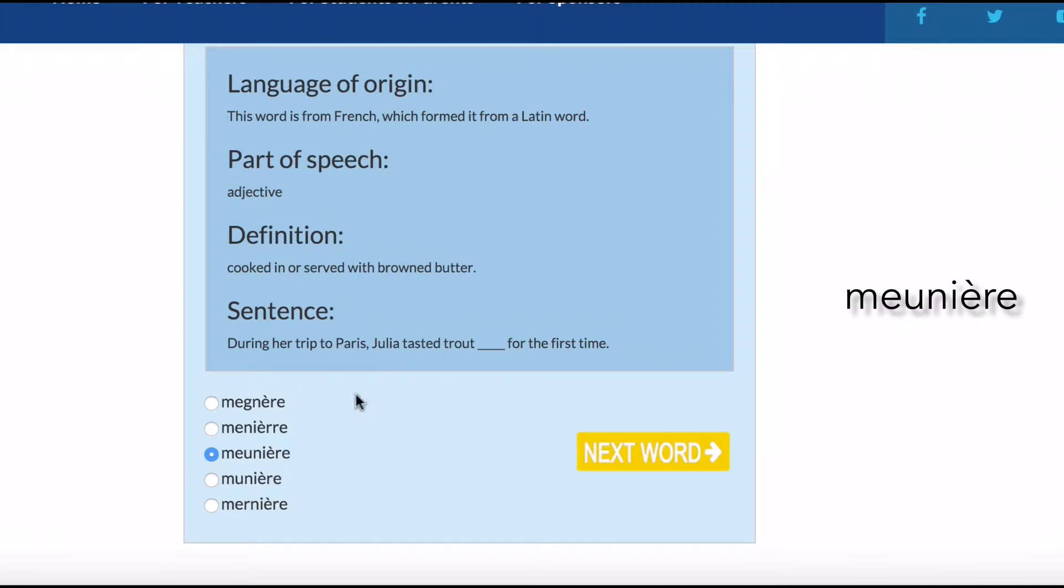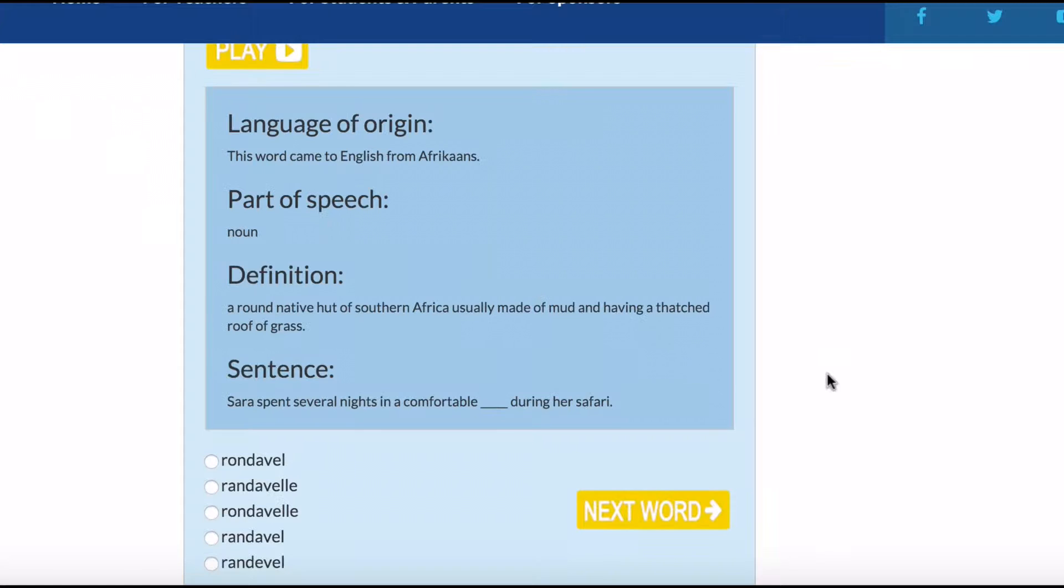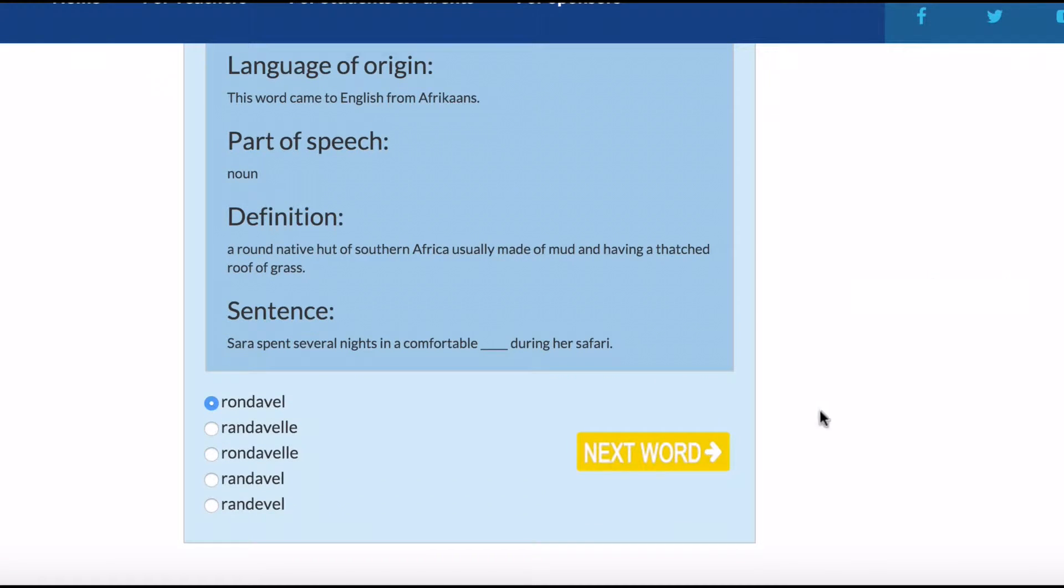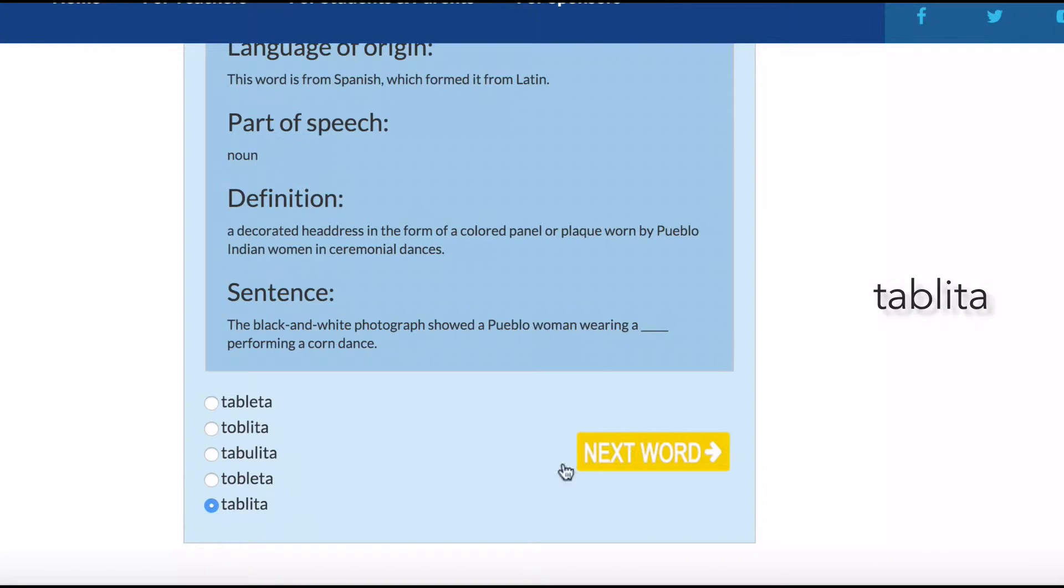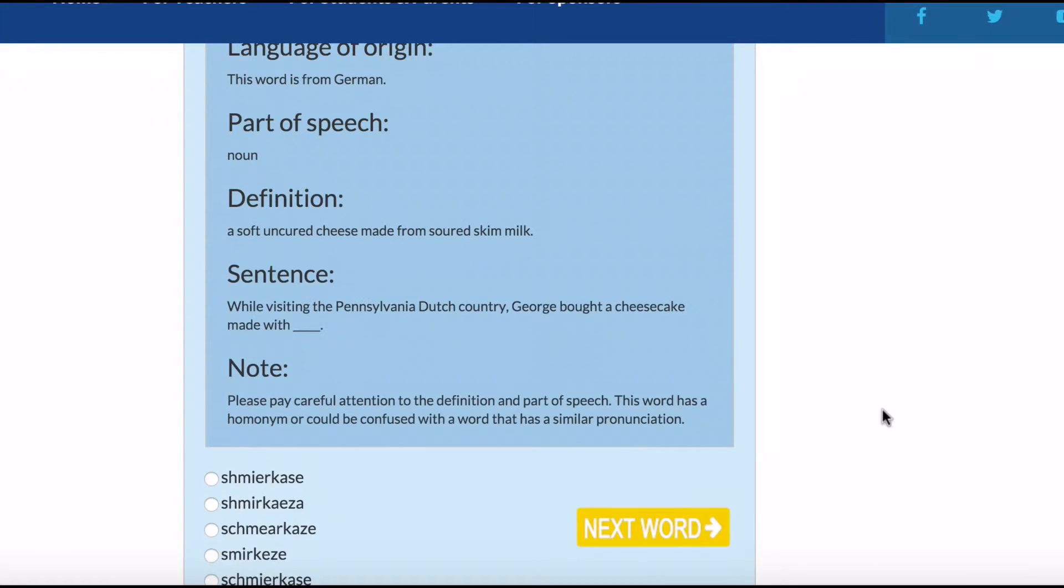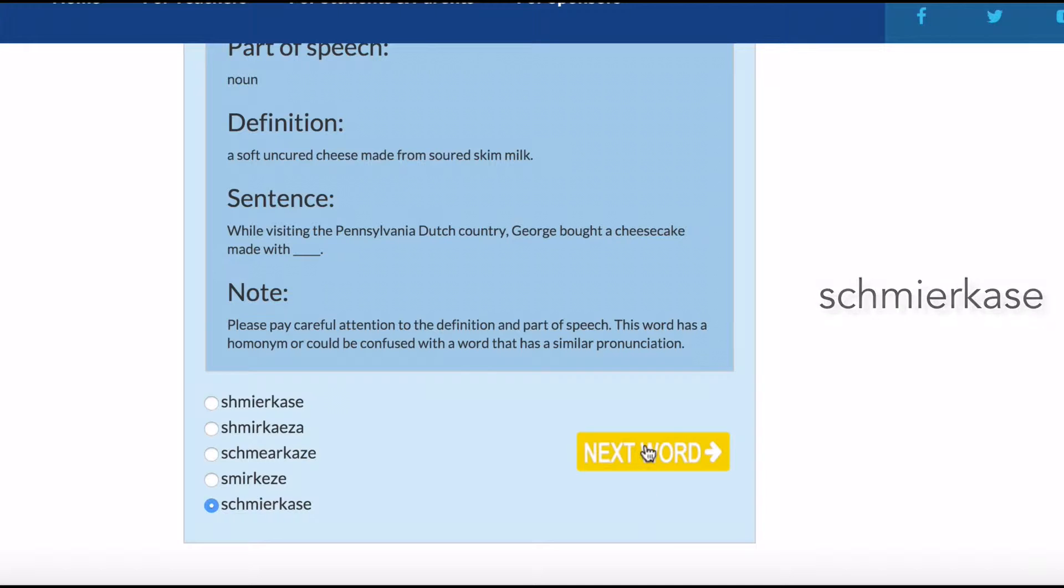Meniere is like, cooked in or served with brown butter. It's the middle one. Rondeville is the first one. Tablita is the latter one. Schmeerkaza is the latter one again.